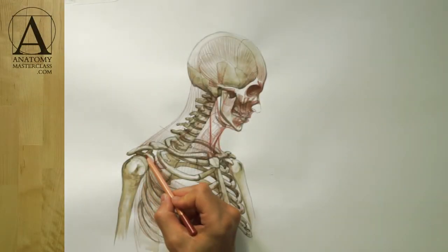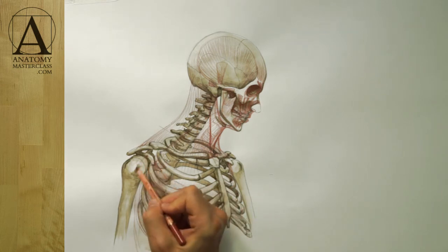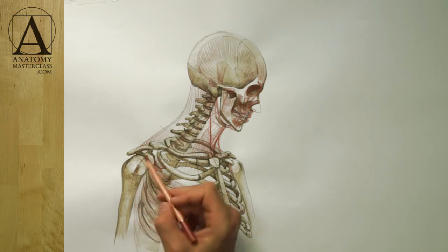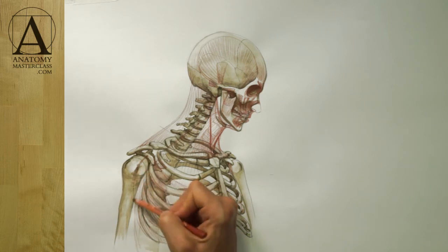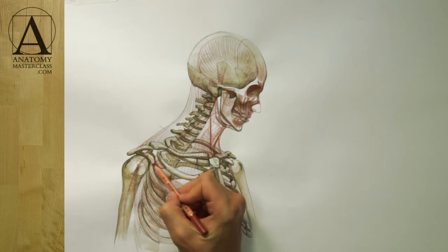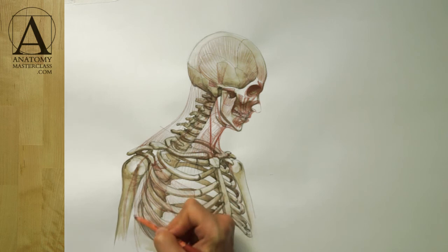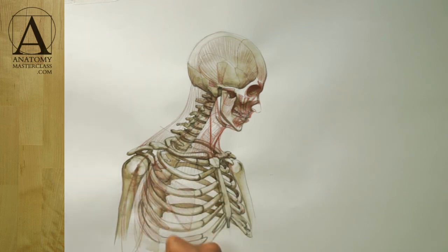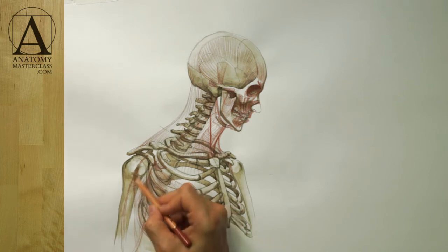Here is the important muscle of the upper arm called the biceps brachii. As indicated by its name, it has two heads that begin from the shoulder blade. The tendon of one head goes along the groove on the upper arm bone. This muscle occupies the entire front portion of the upper arm, and its main action is to flex the forearm.